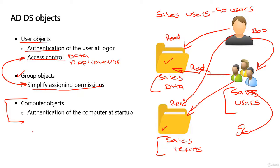The object I sometimes call the 'forgotten object' is the computer object. Usually when people think about Active Directory, they think of users logging on and policies — those types of things. But every computer in our domain has been joined to the domain, so I'm going to have a computer account.